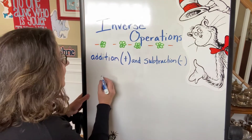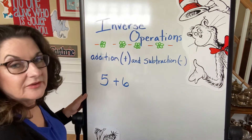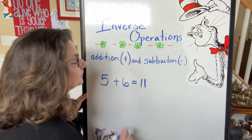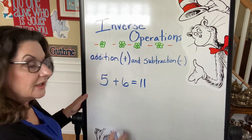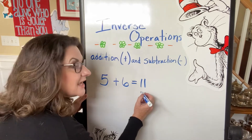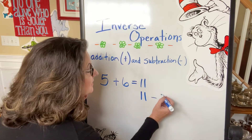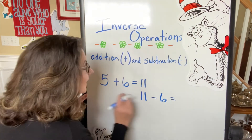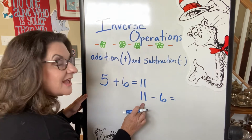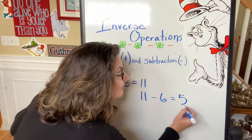Let's say we have 5 plus 6. Well, I know that. That's a double plus 1. That's 11. Then, if I want to write an inverse equation — an upside down or turnaround fact — I would start with 11, take away 6. If I had 5 and I added 6 and got 11, then if I have 11 and take away 6, I'm going to end up with 5.